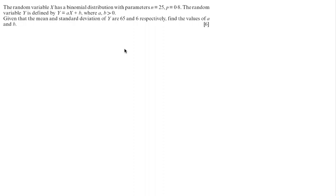The random variable X has a binomial distribution with parameters n equals 25 and p equals 0.8. The random variable Y is defined by Y equals aX plus b, where a and b are constants greater than 0. Given that the mean and standard deviation of Y are 65 and 6 respectively, find the values of a and b.